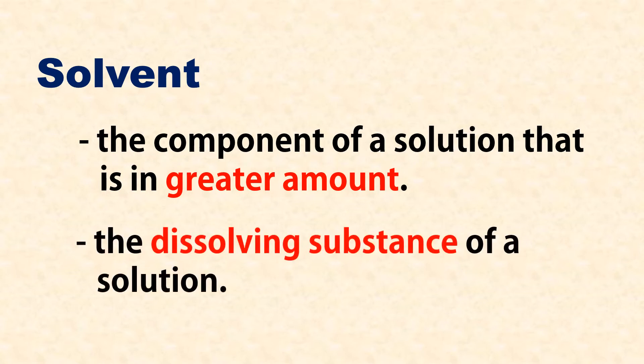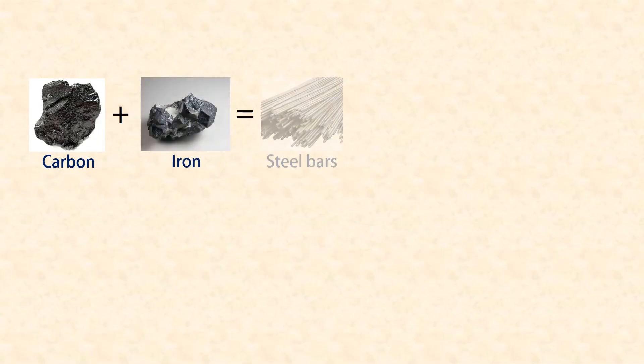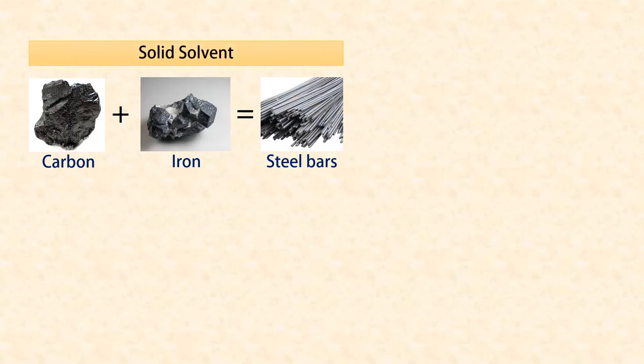Another example is carbon dissolved in iron, which makes manufactured steel bars. The solid solvent here is iron — it dissolves the carbon.